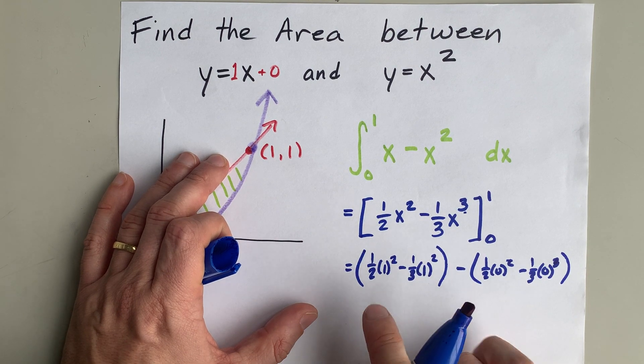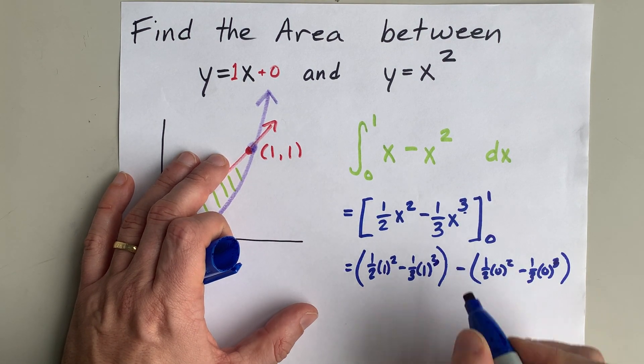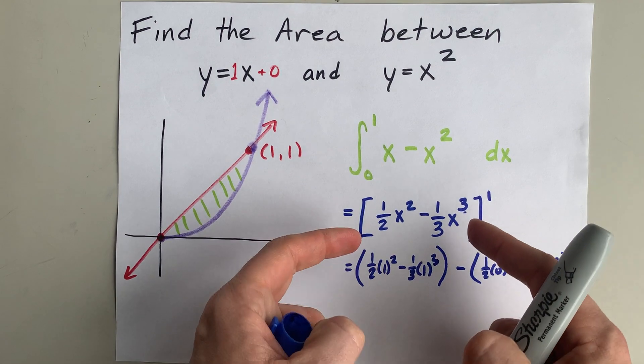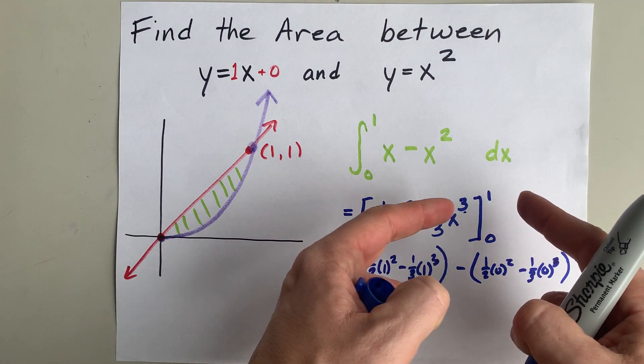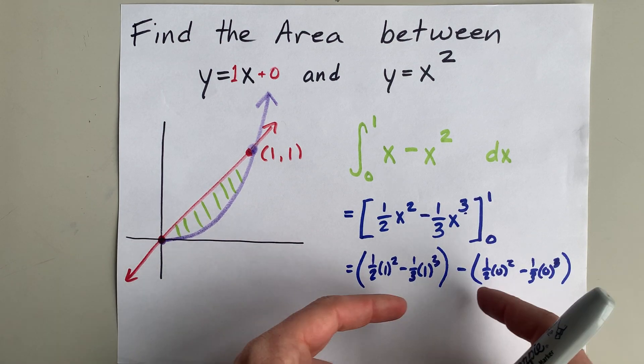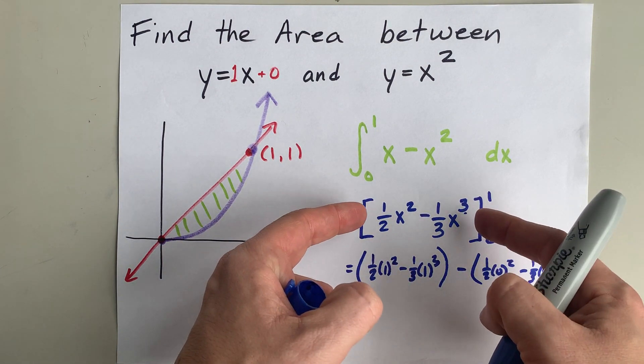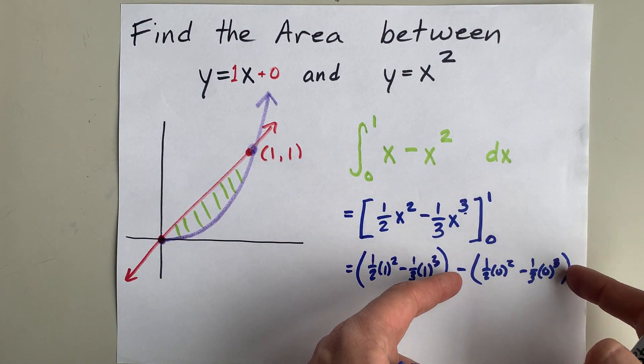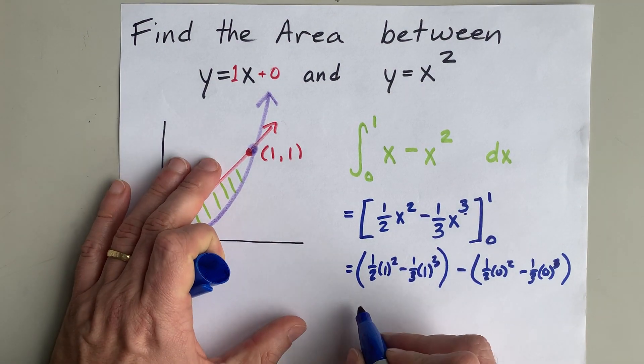I may have said that number wrong. In fact, I definitely did, because I wrote it wrong, too. I'm taking this function, plugging in the number 1, getting that. Then I'm subtracting whatever I get when I take that same function and I plug in 0 for x.